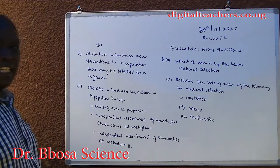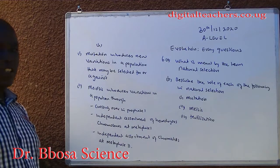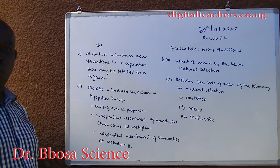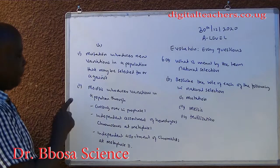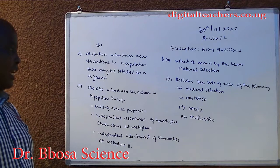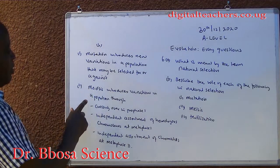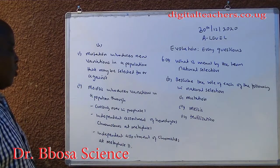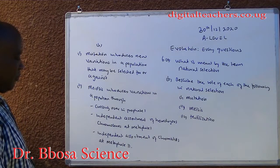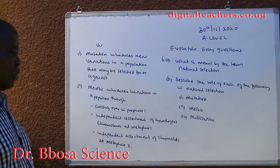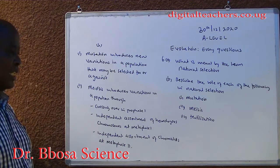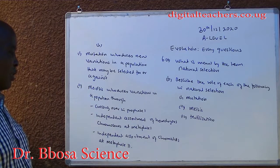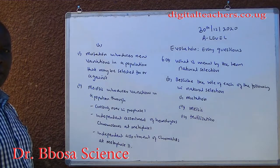B. The role of mutation in natural selection: mutation introduces new variations in a population that may be selected for or against. The role of meiosis in natural selection: meiosis introduces variations in a population through crossing over in prophase 1, independent assortment of homologous chromosomes at metaphase 1, and independent assortment of chromatids at metaphase 2.